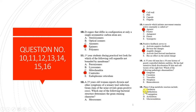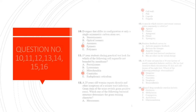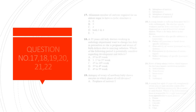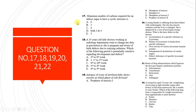Question 16: Regarding metabolism of drugs, phase one drug metabolic reactions include oxidation only, while phase two includes conjugation reactions.